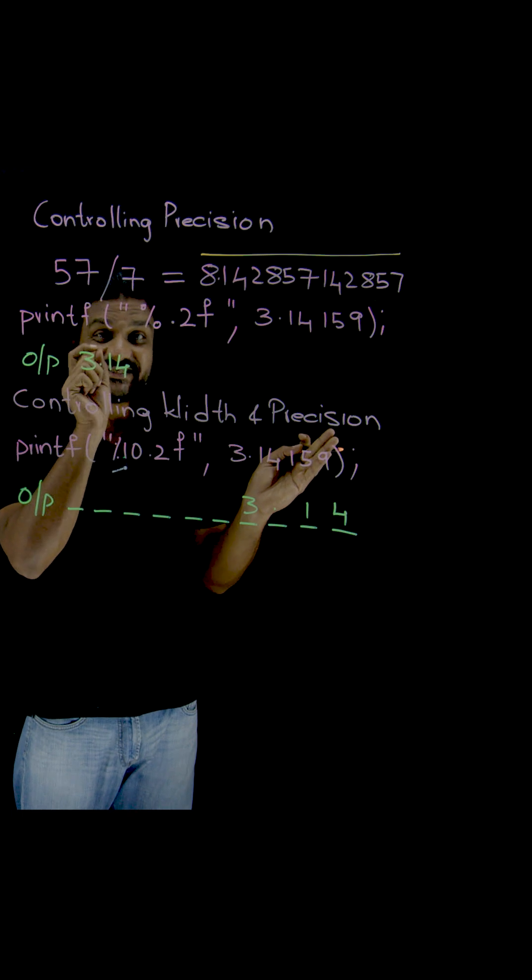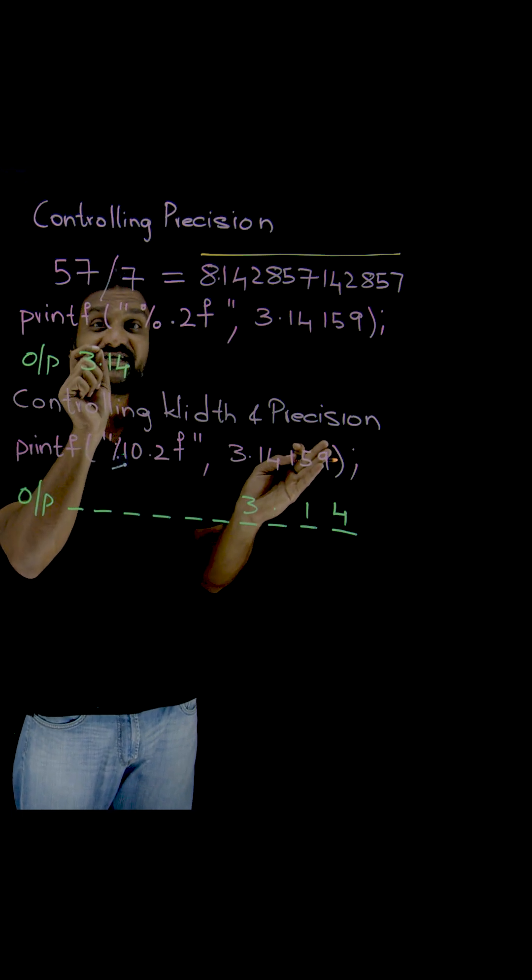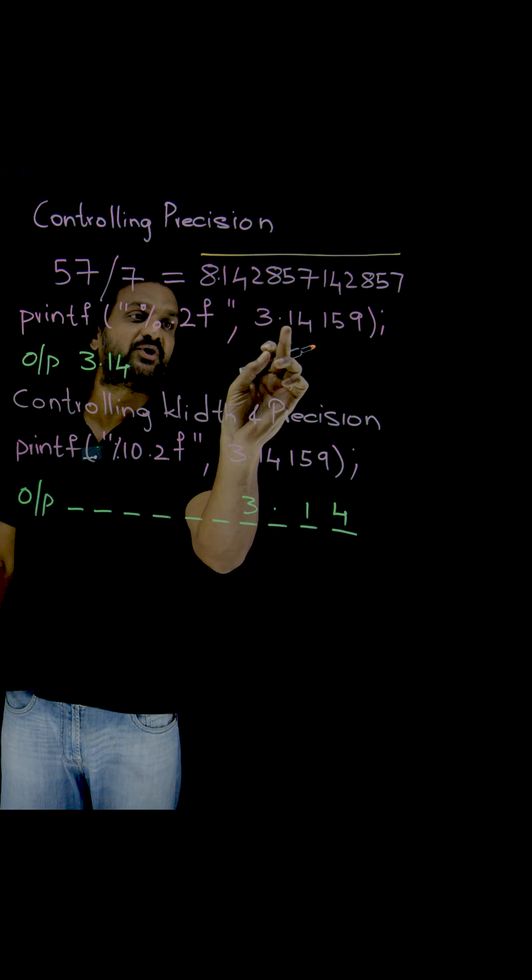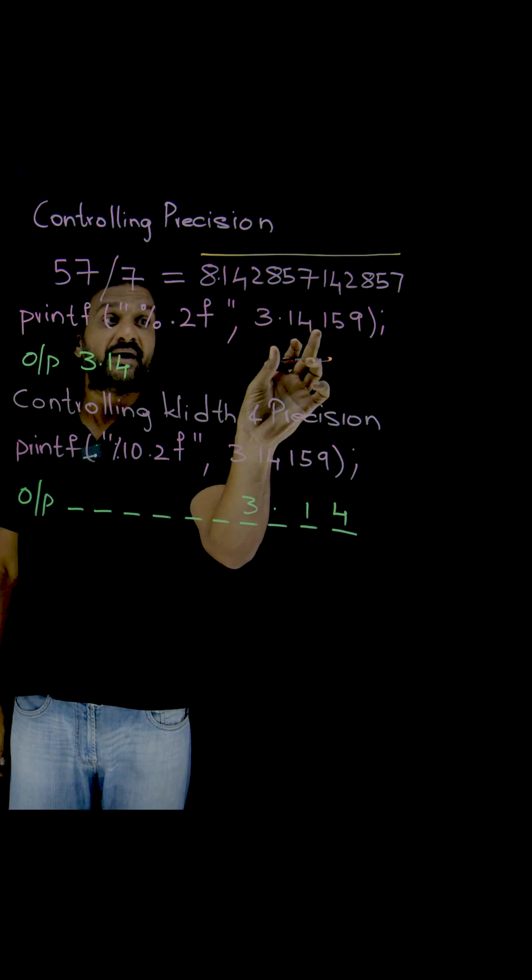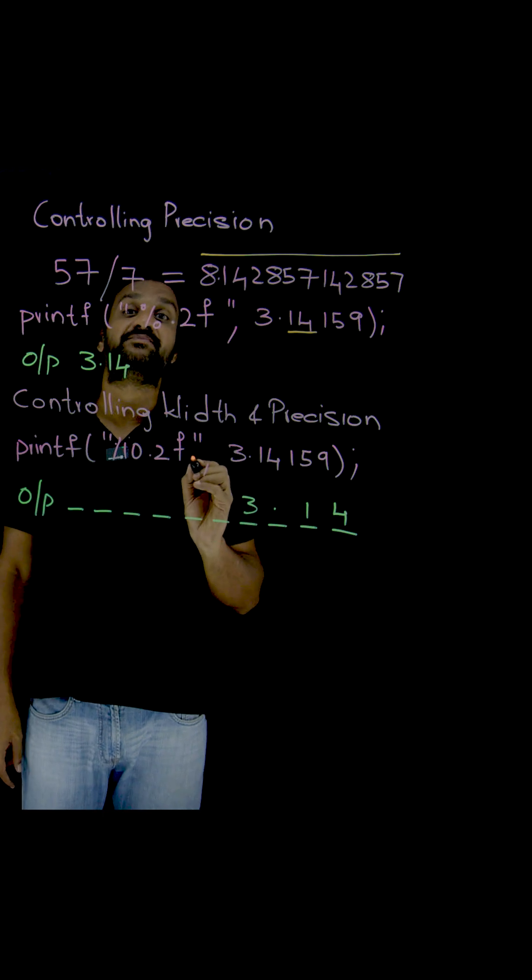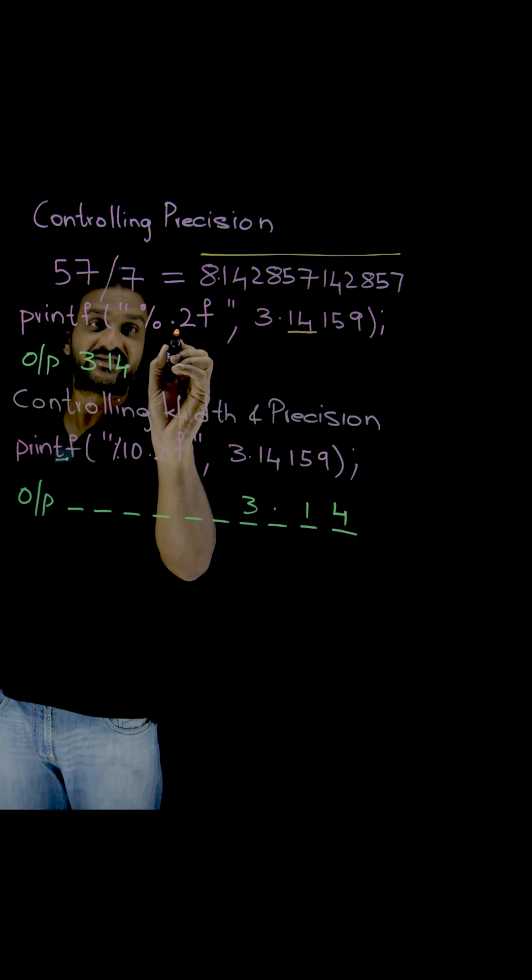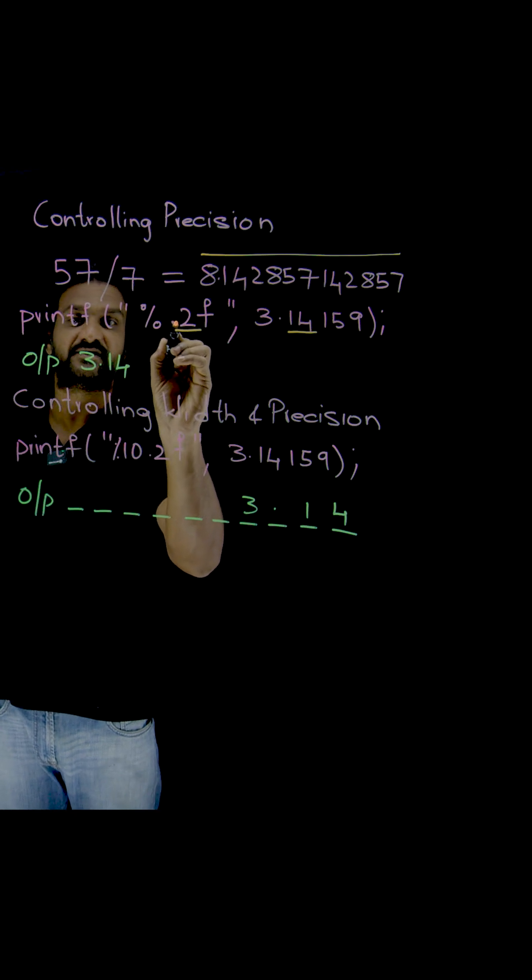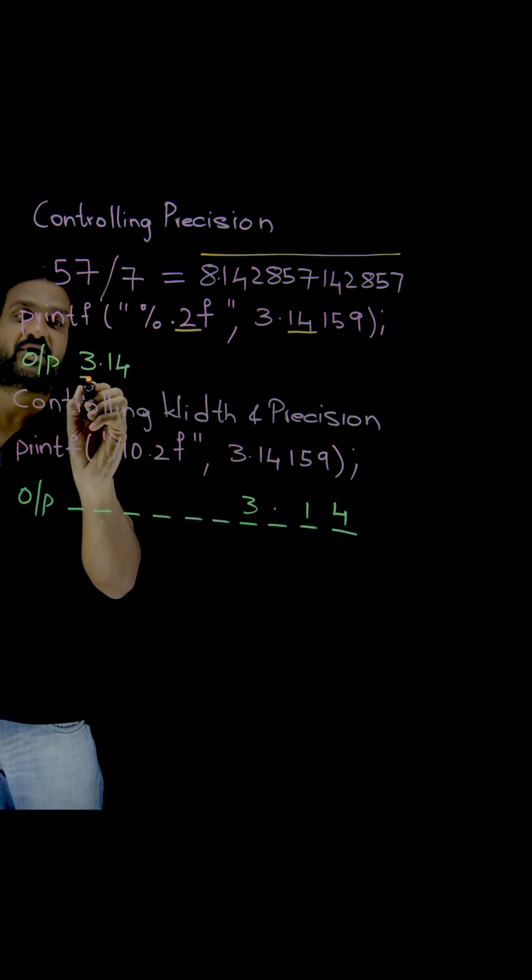That is how the precision can be controlled. I have taken this value 3.14159, which is the value of pi, but I want only two digits after the decimal point. This is stating the precision, this is controlling the precision. So the output is going to be 3.14.